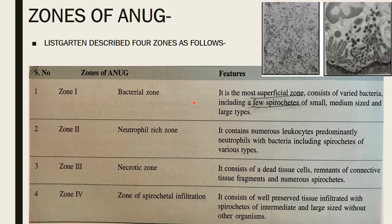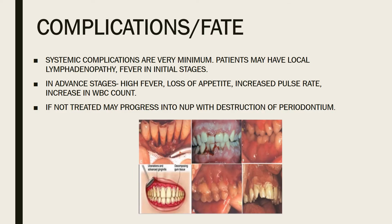The bacterial zone is the most superficial and contains various bacteria with few spirochetes. The neutrophil-rich zone contains numerous leukocytes. The necrotic zone contains dead tissue cells, connective tissue fragment remnants, and numerous spirochetes. The zone of spirochetal infiltration contains the greatest number of spirochetes. These are the four histopathological zones.